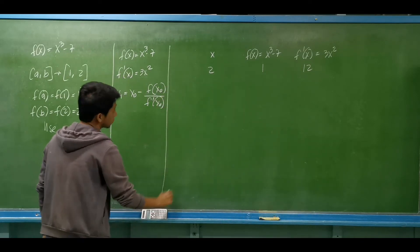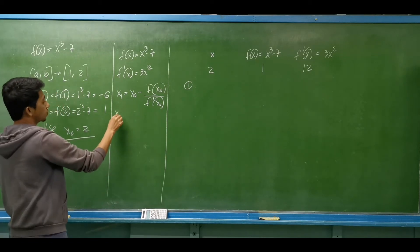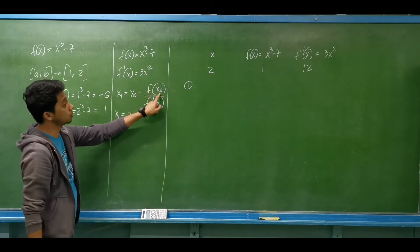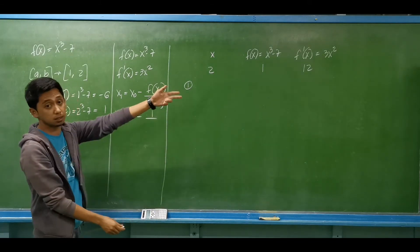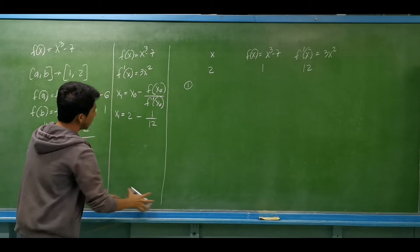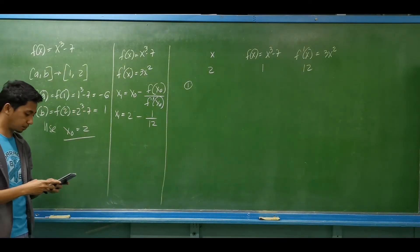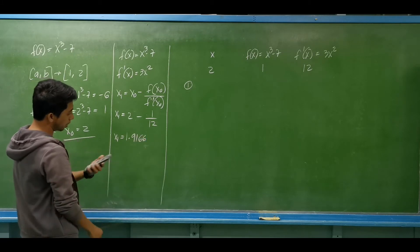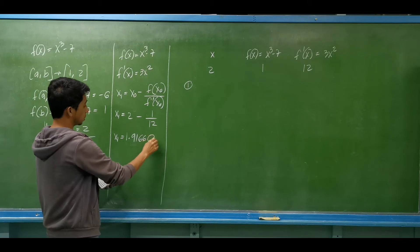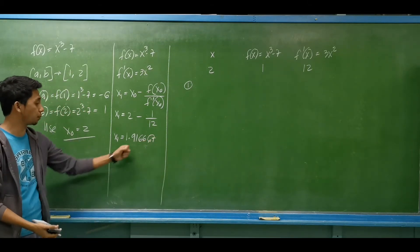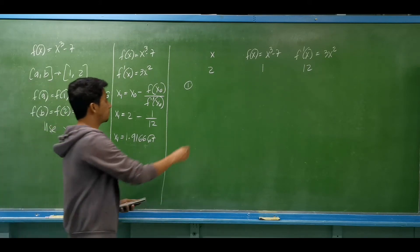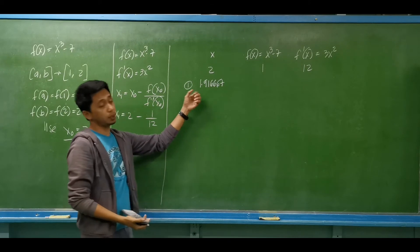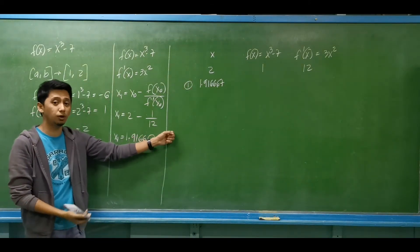For the first iteration, x sub 1 equals x sub 0 minus f of x sub 0 divided by f prime of x sub 0. That is 2 minus 1 over 12. The next value of x is 1.916667. We can use more decimal places for a more accurate result.